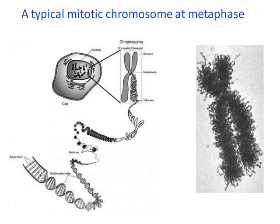Normally, chromosomes are not visible even under a microscope. Chromosomes are visible only at the time of division. In the picture you can see the chromosome — these are metaphase chromosome pictures where the DNA is maximum condensed.